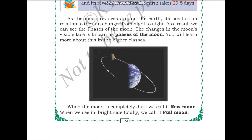As the moon revolves around the Earth, its position in relation to the Sun changes from night to night. As a result of this, we see the phases of the moon. Every month, one day we will be able to see a full moon, and one day the moon is not visible to us. Some other days, we will be able to see half of the moon, maybe one tiny line — a crescent moon. These are called the different phases of the moon.